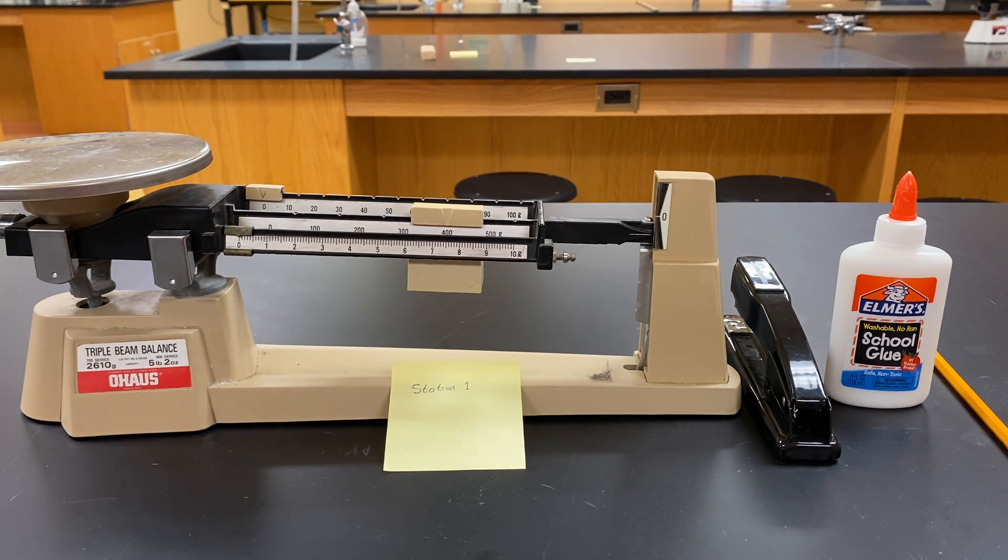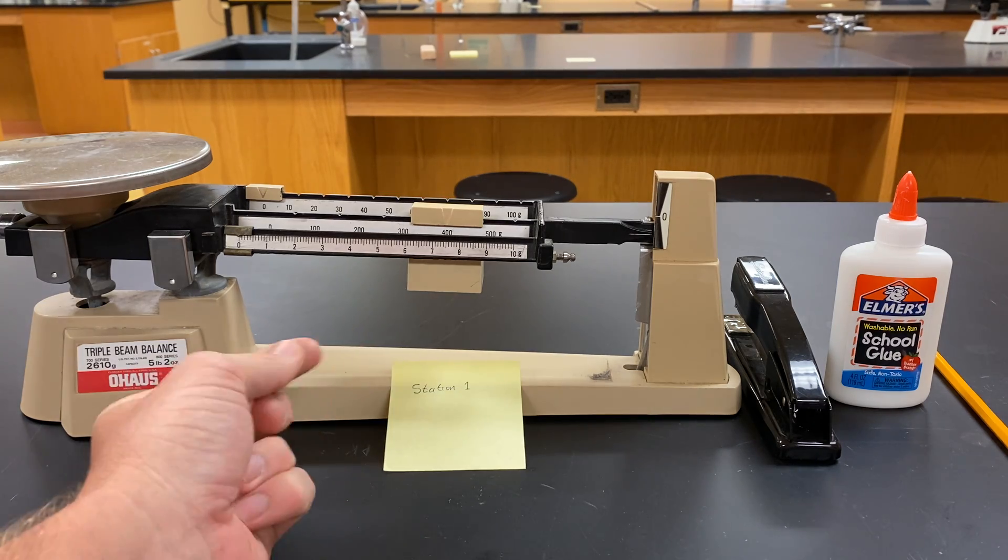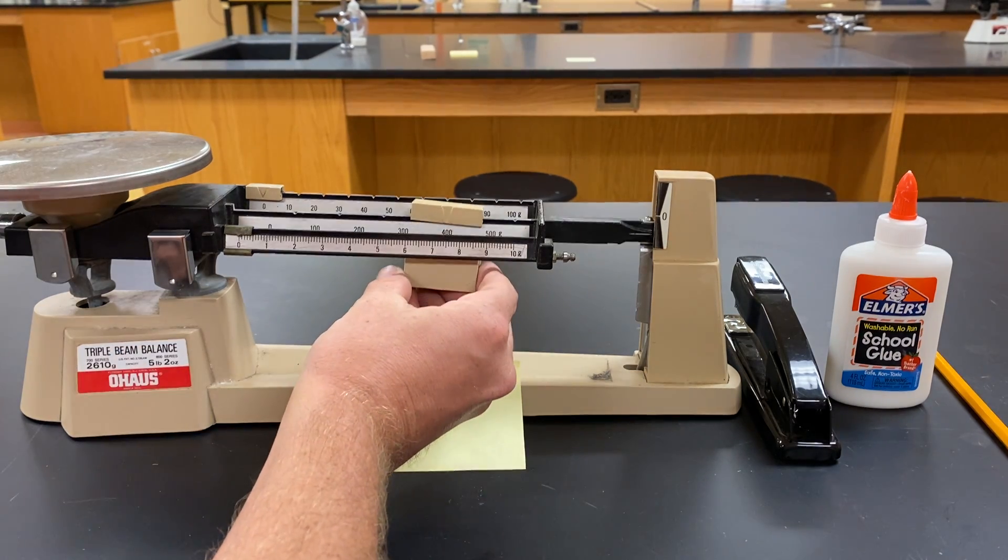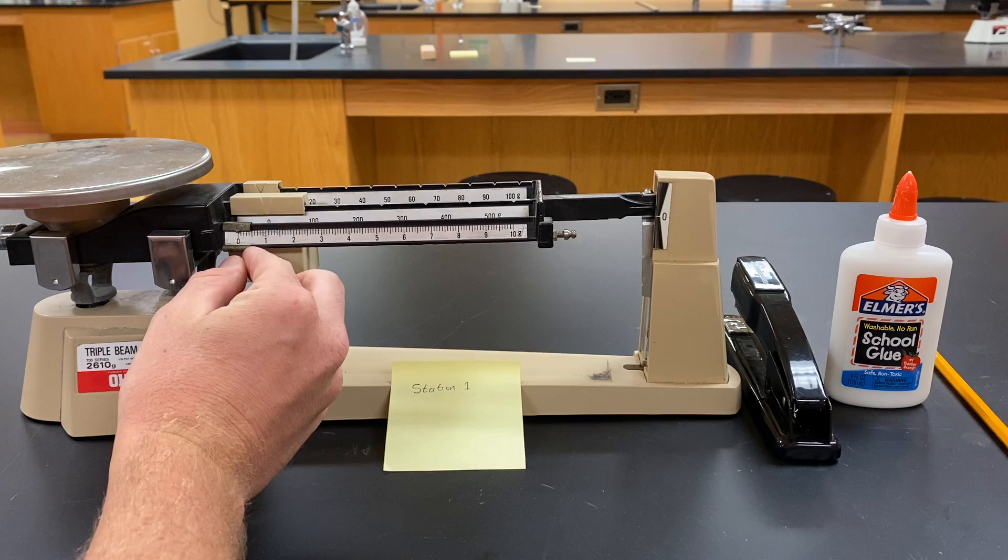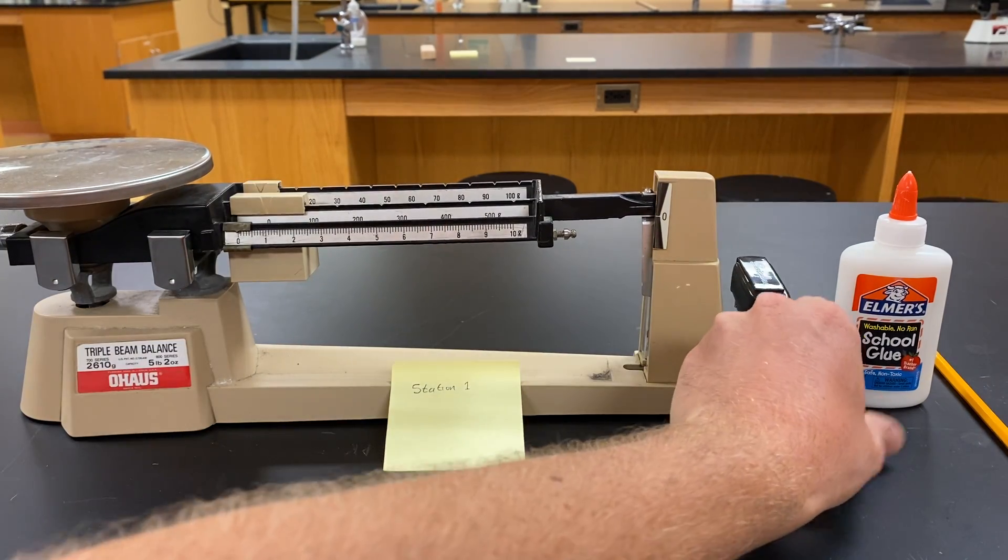In order to find the mass and use the triple beam balance, the first thing we're going to do is zero out our scale. We'll start with all of our weights all the way to the left at zero.